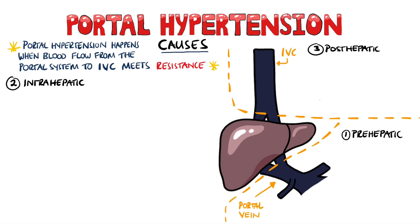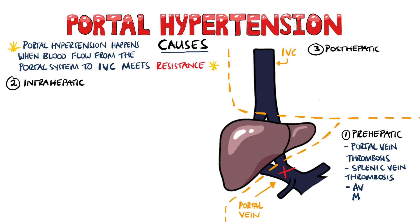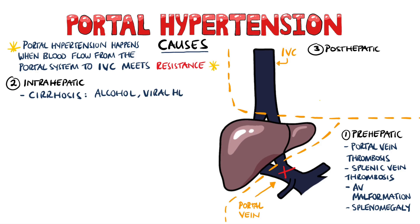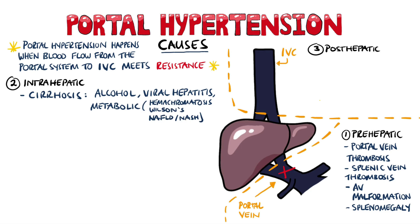Pre-hepatic causes include portal vein thrombosis, splenic vein thrombosis, an arteriovenous malformation, and splenomegaly. Intrahepatic causes include the most common cause, cirrhosis, which can come from alcohol abuse, chronic viral hepatitis, metabolic conditions like Wilson's disease, haemochromatosis, or fatty liver disease.